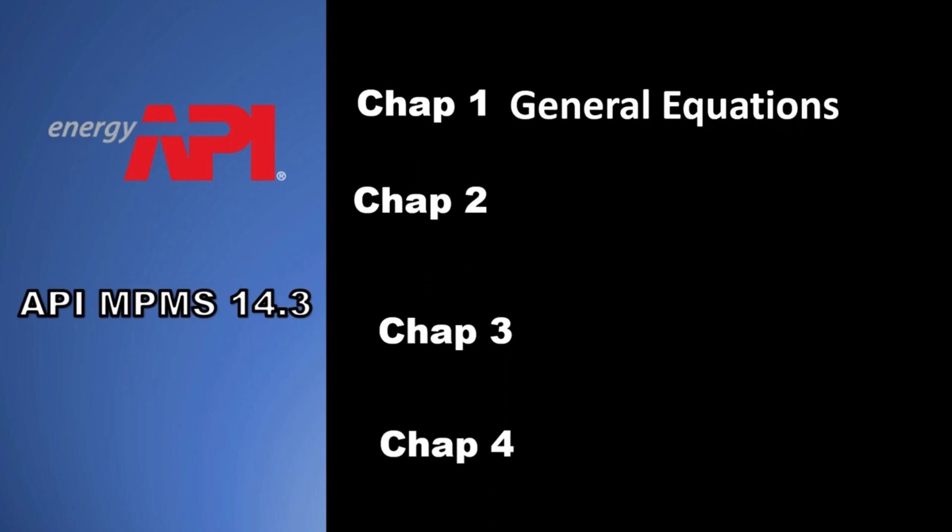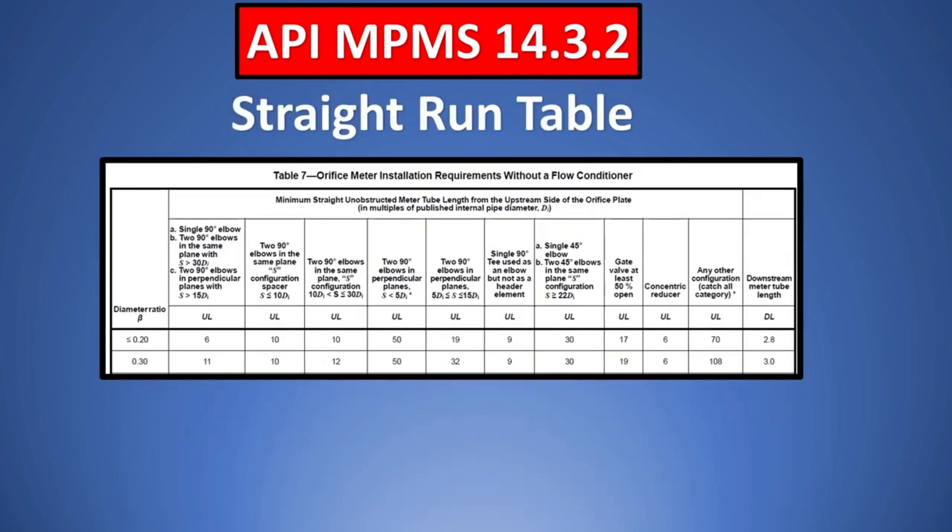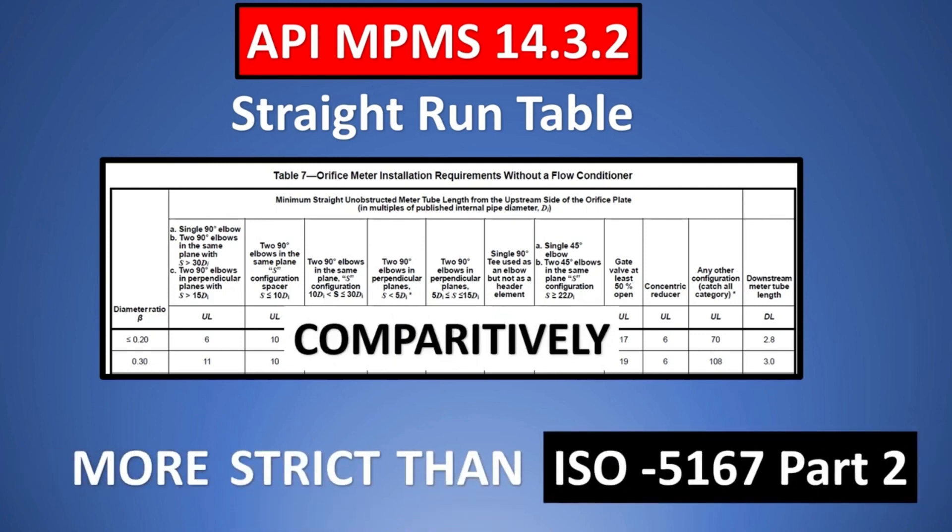The first one stands for general equations. One thing to remember here is all of these 4 deal with orifice plates only. The second one deals with the specifications which is the most important out of the 4. The third one basically deals with application of chapters 1, 2 and 4. And finally, the fourth one deals with what was the background, how was this developed, etc. So let us look into this chapter 2 which is specifications. Similar to your ISO standard, API MPMS 14.3.2 also has a straight run table. And it is very similar to ISO 5167 but comparatively, if you see, this is more strict than ISO 5167. Why? Because if you see the word MPMS here, it stands for manual for petroleum measurement standards. Because the petroleum products are more costly, hazardous, etc., the more stricter ways are used. So more straight run requirements etc. are defined here.